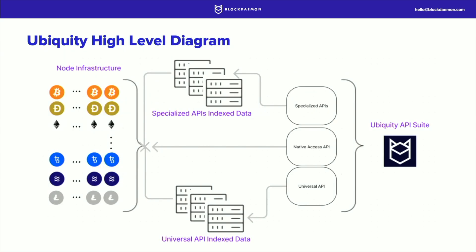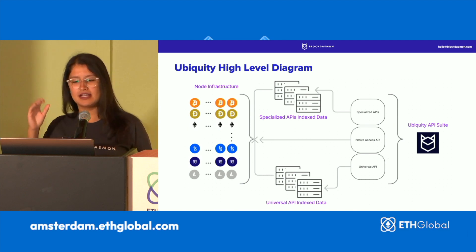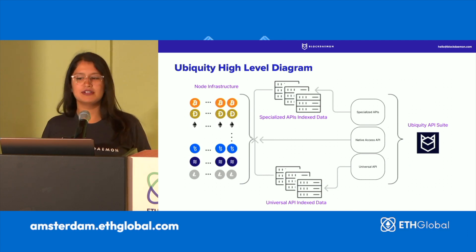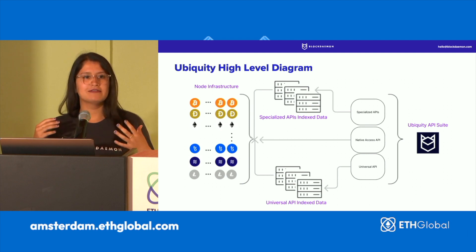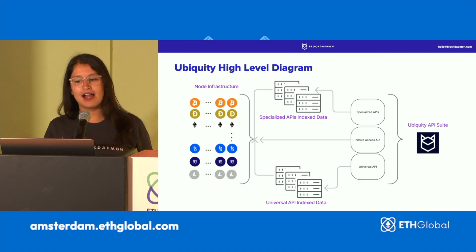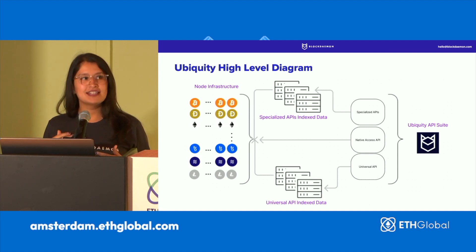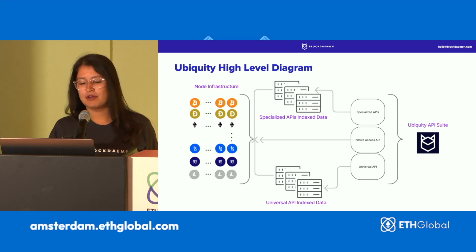Here's what our Ubiquity API looks like at a high level. You've got the three main pillars: the specialized APIs, the native access API, and the universal API. These all fall under the umbrella of Ubiquity — that single pane of glass, easy to use, frictionless across different chains, even though it's different tools and protocols. It's one user experience. If you need direct access you can use our native access API, and for specialized and universal data you can use those APIs to index.